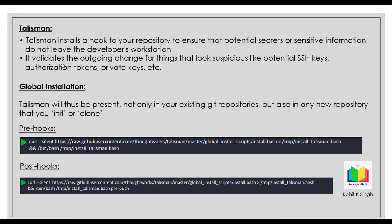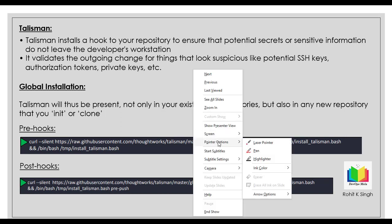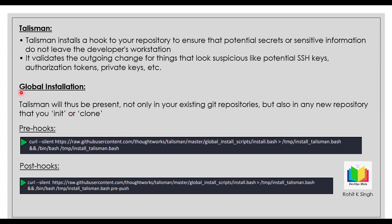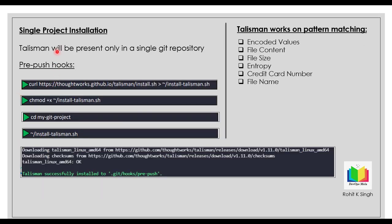It validates outgoing changes for things that look suspicious, like potential SSH keys, authorization tokens, private keys, etc. There are two ways to install Talisman: global installation, where Talisman is present not only in your existing git repository but also in any new repository you init or clone; and single project installation, where Talisman is present only in the single git repository you set it up in. Talisman works on pattern matching — it looks for encoded values, file content, file size, credit card numbers, and more.